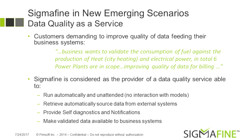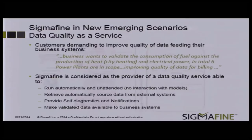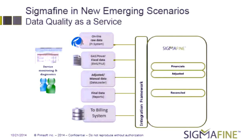This data has to be made available to the business system. SIGMA FIND is seen as a provider of data quality, in which there are sort of endpoints. Through the integration framework, we can both access data coming from external systems and expose or push — depending on the integration rule — results to the business system. The users experience an improvement in data quality but do not need to interact with the model.